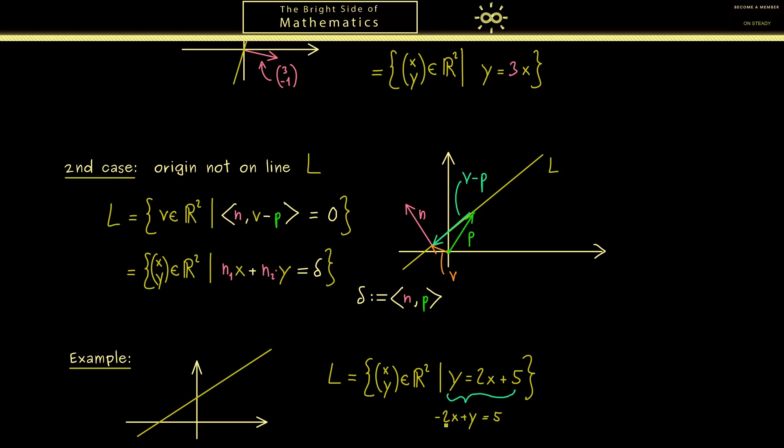And now you should see this here can be written in the same form as before. So for example, just bring 2x to the other side. So we have minus 2x plus y is equal to 5, which then means N1 is minus 2, N2 is 1, and our delta is 5. Hence our normal vector should be minus 2, 1.